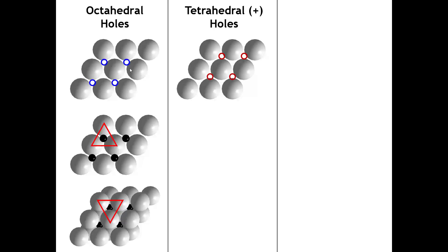The coordination of that cation is a trigonal antiprism, and specifically it's an octahedron—so those are the octahedral holes. In a more extended array, the number of those blue-circle voids equals the number of anions in the layer below. Therefore, the number of octahedral holes in a close-packed array of anions equals the number of anions in the array.